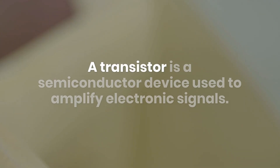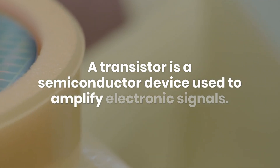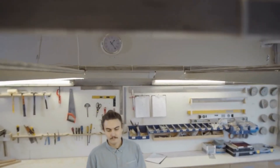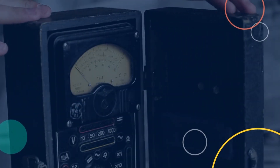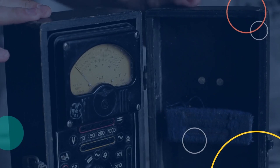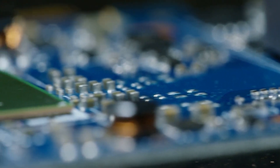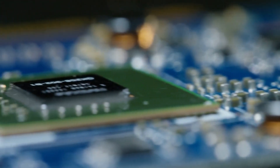Question fifteen: Explain the function of a transistor. A transistor is a semiconductor device used to amplify or switch electronic signals. It has three terminals: emitter, base, and collector. By controlling the current flow through the base, it regulates the current between the collector and the emitter. Transistors are fundamental components in amplifying and switching applications.